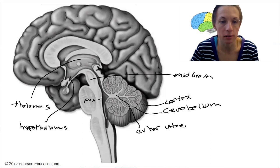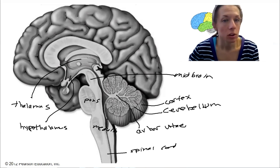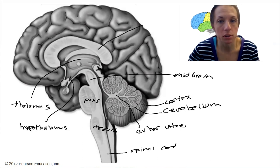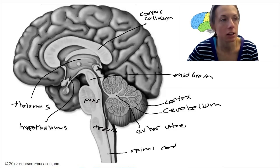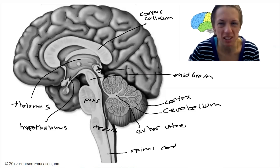We've got our pons, our medulla oblongata, and our spinal cord. We've also got our corpus callosum that attaches the two sides of the brain to each other, and the last one on the list here is the superior colliculus.